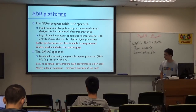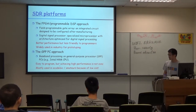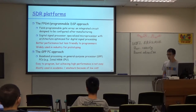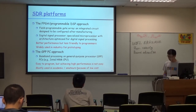Another method is to use a general-purpose PC for baseband signal processing, based on general-purpose CPUs such as Intel or ARM. This is easier to program since most people have programming skills. However, achieving high performance is not easy because general-purpose CPUs are not designed for signal processing. This method is mostly used in academic work because the cost is lower.